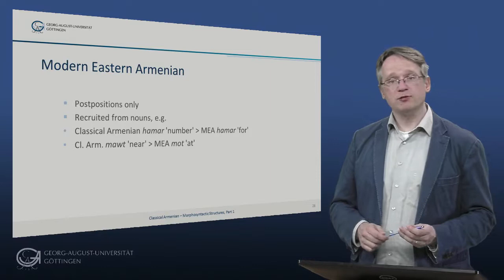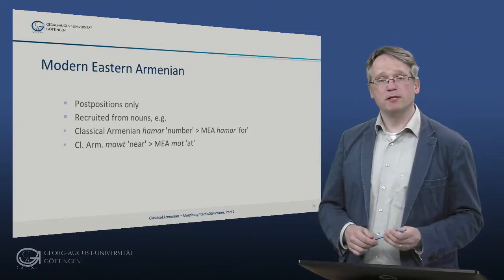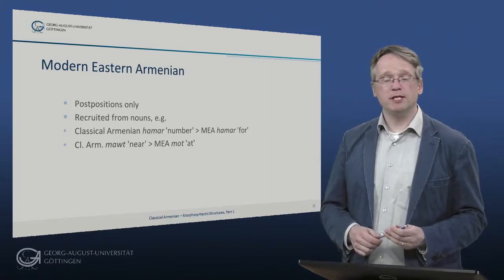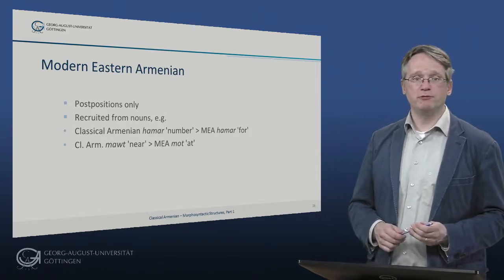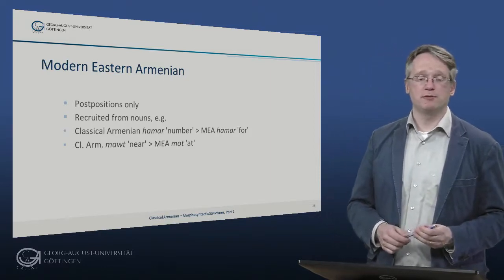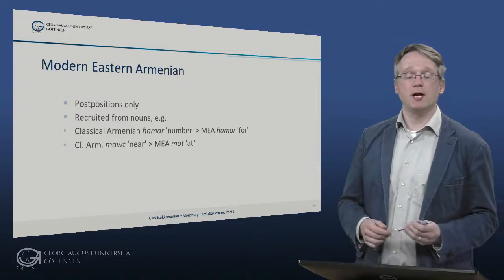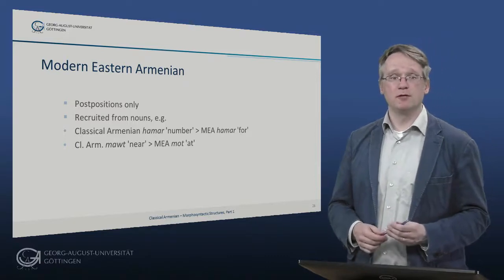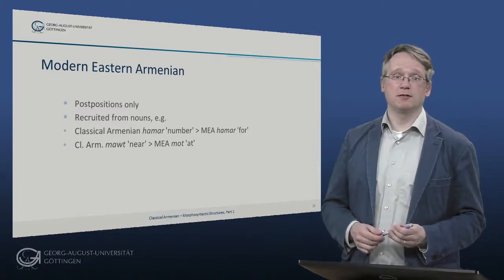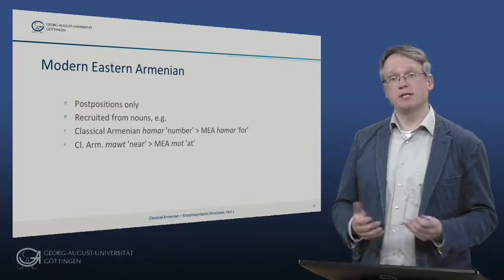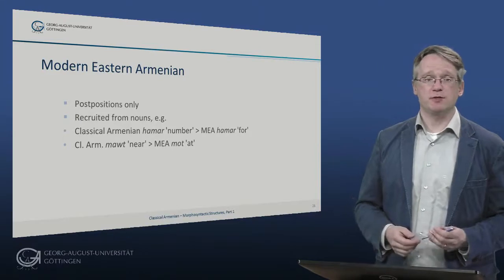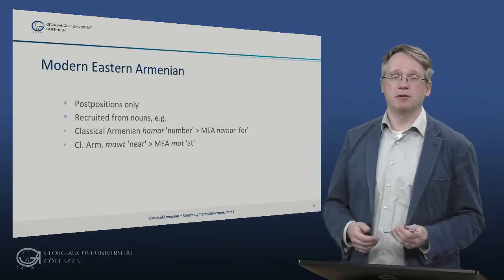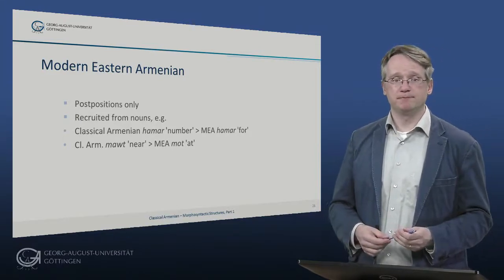As mentioned already, modern Armenian only has postpositions that are mostly recruited from nouns — for example, hamar, meaning 'for', from classical Armenian hamar, 'number' — and adjectives such as mot, meaning 'at', from classical Armenian maut, meaning 'near'.